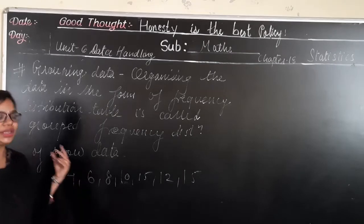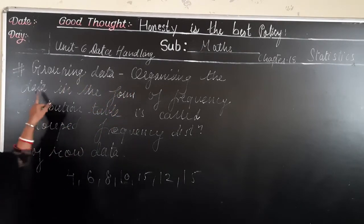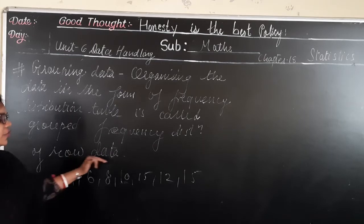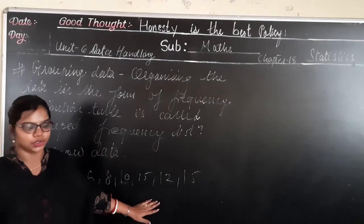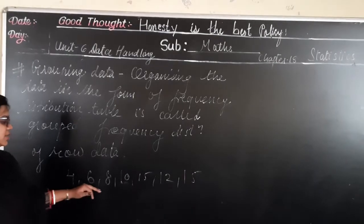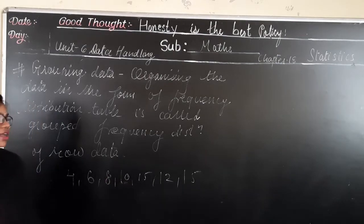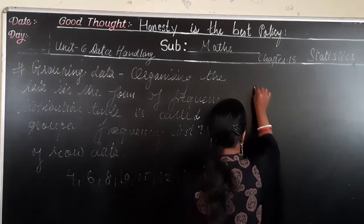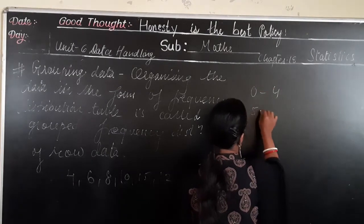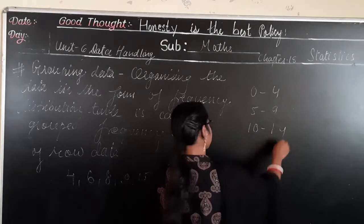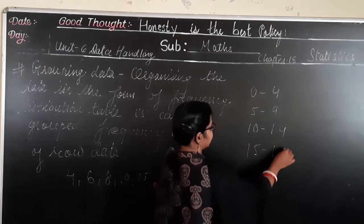The next topic is grouping data. Grouping data means organizing the data in the form of a frequency distribution table. This table is called the grouped frequency distribution of raw data. Suppose this data is given to you: 4, 6, 8, 10, 15, 12, and 15. If I write this in the form of grouped data, I can write: 0 to 4, 5 to 9, 10 to 14, and 15 to 19.